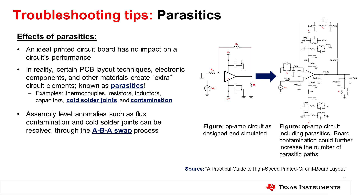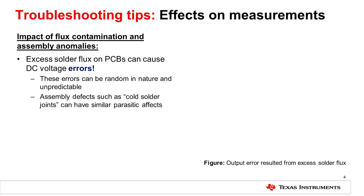Therefore, it's extremely important to inspect for assembly level anomalies such as flux contamination and cold solder joints to limit the number of parasitic paths we may encounter. A lot of these issues can be resolved through an ABA swap. This example looks at the amount of voltage error we find doing a DC measurement. These errors can be random in nature and unpredictable, and issues like cold solder joints and flux contamination have this type of effect on our circuits.